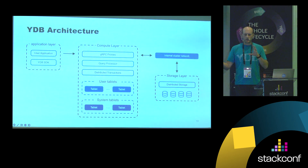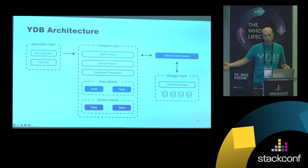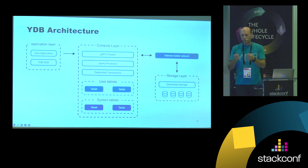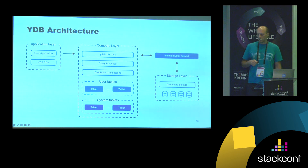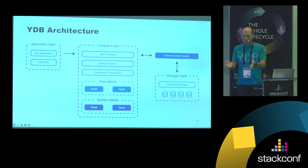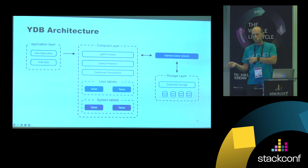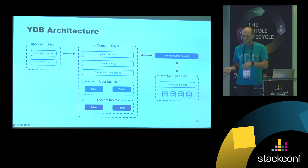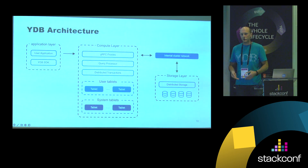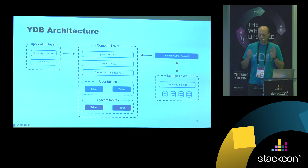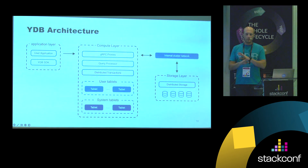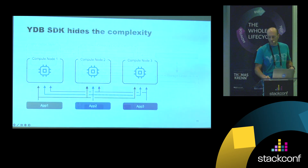The compute layer is comprised of YDB processes which have no need to know anything about the distribution of the data on storage devices. You can just run a YDB process in a virtual machine, tell it the address of the storage cluster, and the name of the database it's going to serve. The compute layer is responsible for handling queries — it processes SQL queries and does all the computations. Applications connect directly to the compute layer of the cluster and have nothing to do with the storage. Processes running in compute layer communicate with storage using a simple API like 'write the blob by ID' or 'read the blob by ID'. The compute layer knows nothing about copies, redundancy, or hard disk drives. The third layer is the application itself.